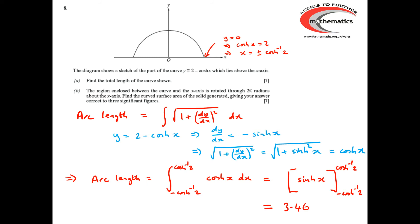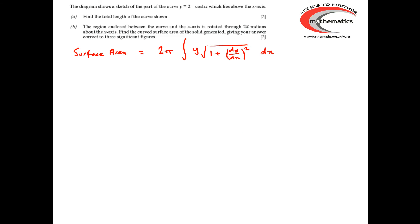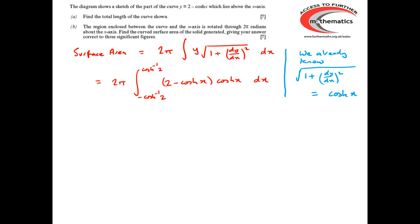Moving on to part b. We know the formula for the surface area is 2π times the integral of y times the square root of 1 + (dy/dx)². We already know that the square root of 1 + (dy/dx)² for this curve is cosh x. So the surface area is 2π times the integral between −cosh⁻¹(2) and cosh⁻¹(2) of (2 − cosh x) times cosh x.